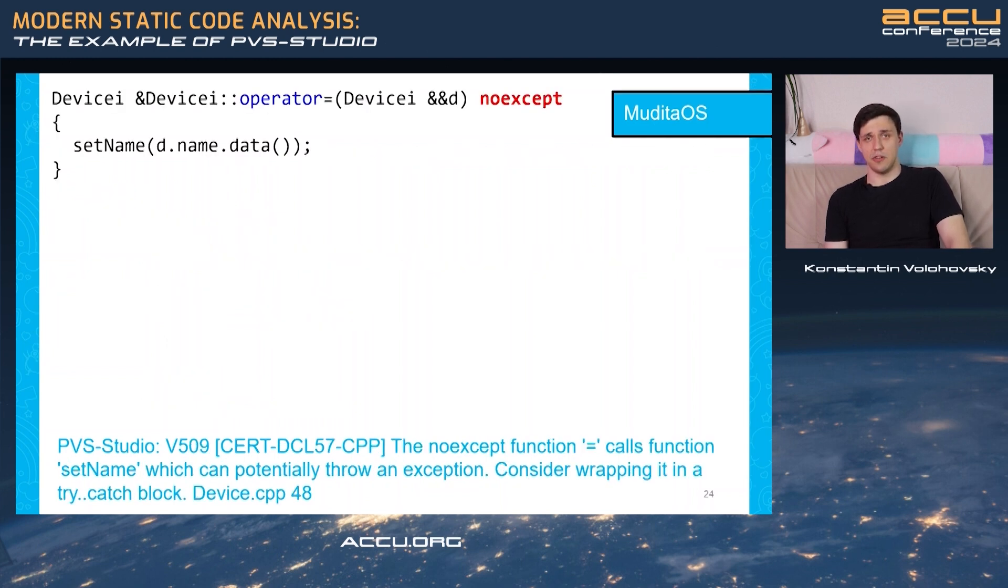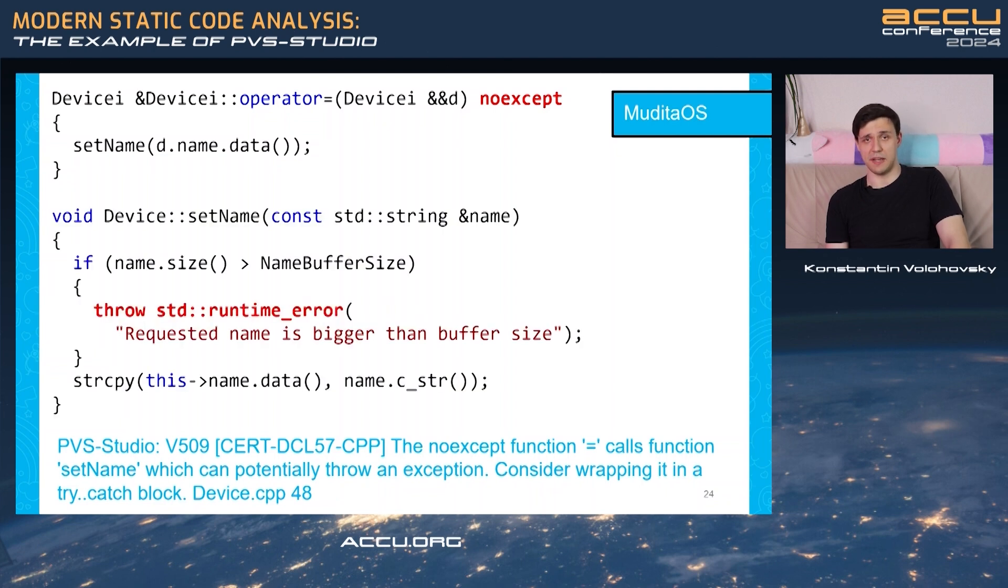Like this one. Here, developer overloads equals operator. This method marked as noExcept. It means that you cannot throw exceptions there. Indeed, there are no exceptions thrown inside the body of this method, but uses the setName method and it is able to throw exception. If that happens, the application will crash.